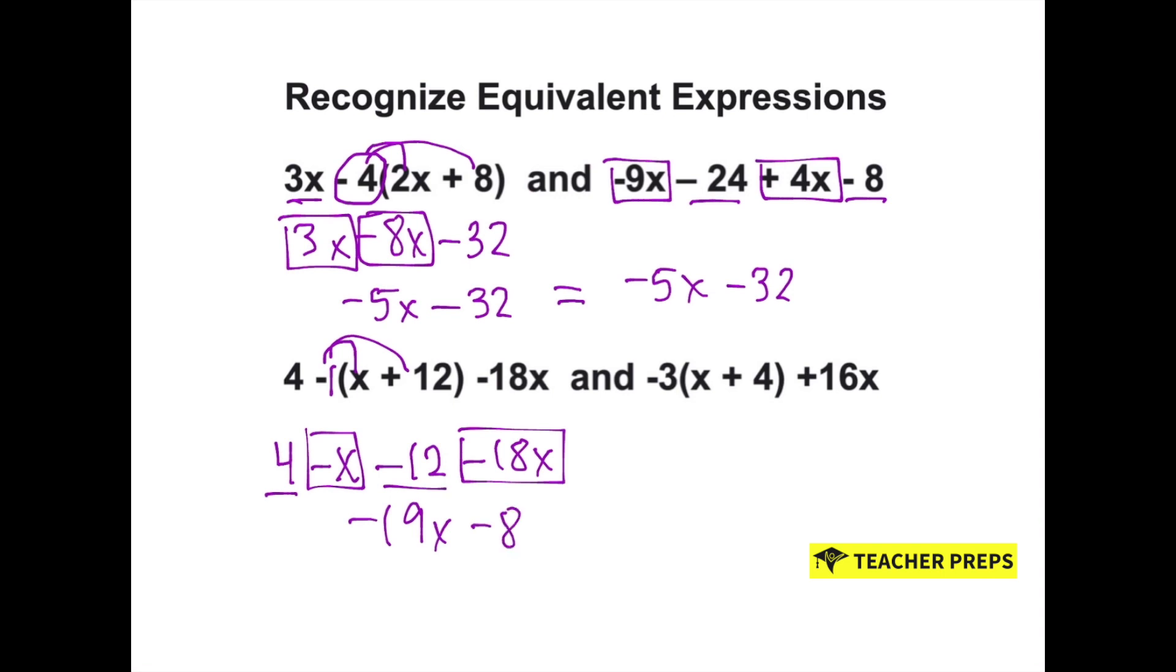Now let's look at the side on the right. We have to distribute the negative 3 through. That gets us negative 3x. And negative 3 times 4 is negative 12. Now we have to add 16x. Negative 3 and positive 16 make a positive 13x. And then we have this minus 12 with nothing to combine with.